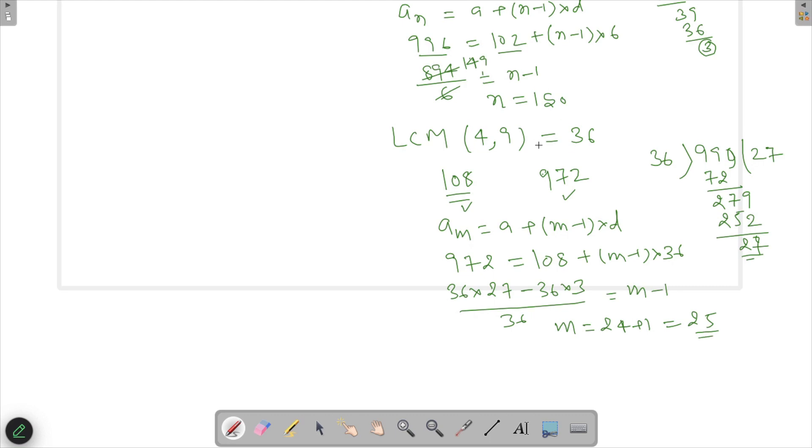Now my required number will be just N minus M, which is 150 minus 25, which is 125. So yeah, this is what will be my answer here.